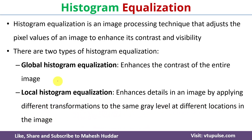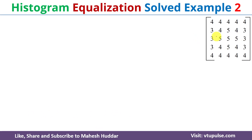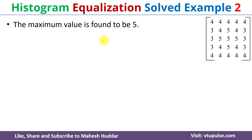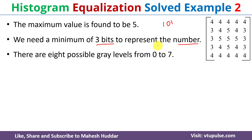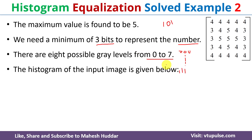In the given image, the maximum value is found to be 5. In binary form, 5 can be represented as 101, so we need a minimum of 3 bits to represent the number. Whenever we use 3 bits, we get 8 possible gray levels from 0 to 7, that is 000 to 111.